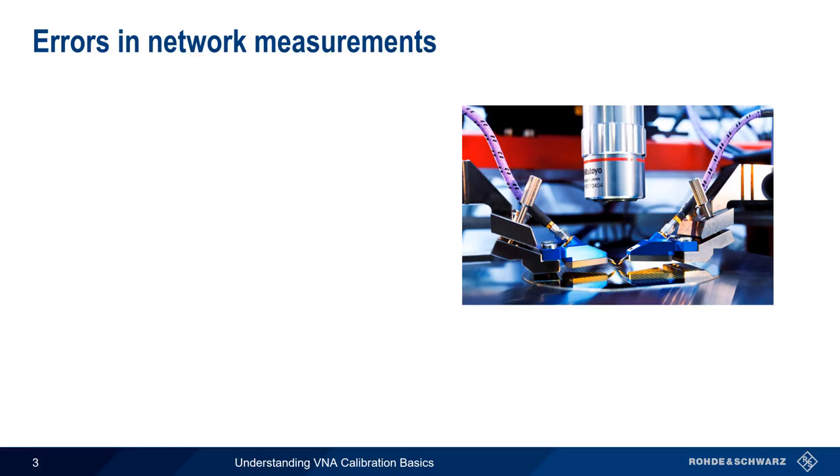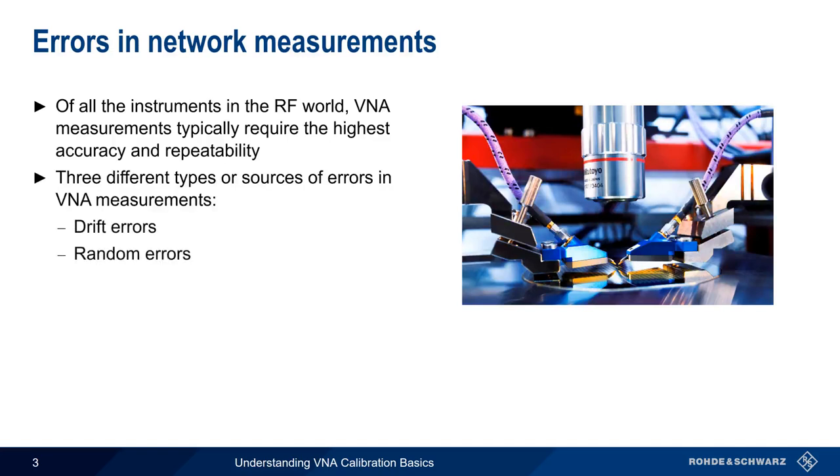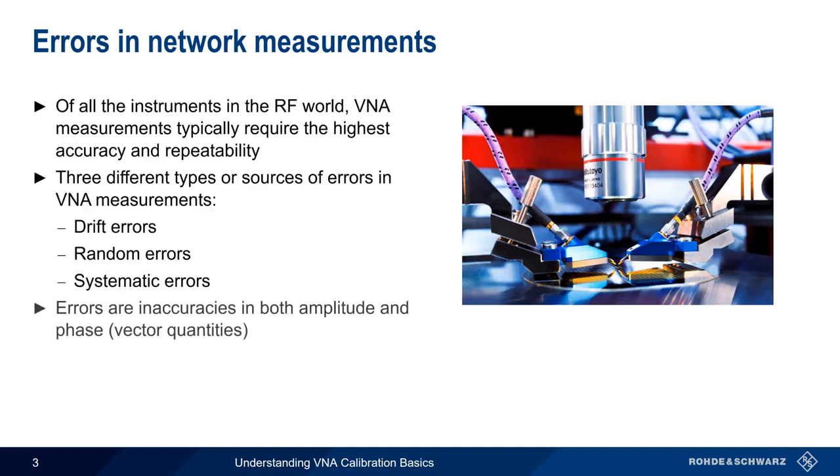Measurement accuracy and repeatability are always important, but it's fairly safe to say that vector network analyzer measurements are among the most demanding in the radio frequency world. Generally speaking, we can classify measurement errors into three main categories, namely drift errors, random errors, and systematic errors. You may also hear random errors and drift errors collectively referred to as stochastic errors. Regardless of type, errors cause inaccuracies in both the amplitude and the phase of measured signals, which means that errors are also vector quantities. Let's start by taking a brief look at each of these error types.